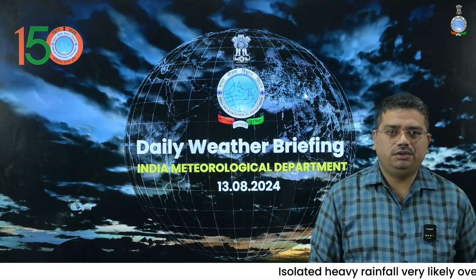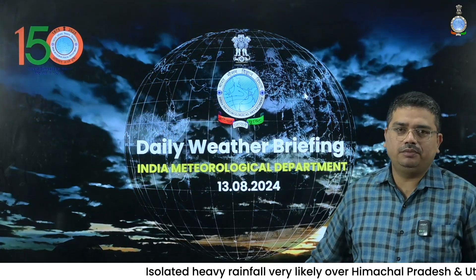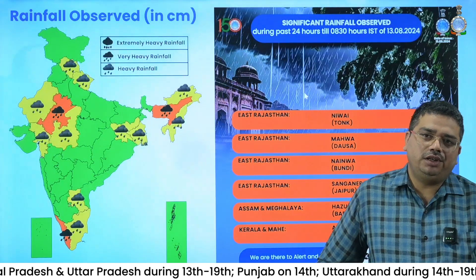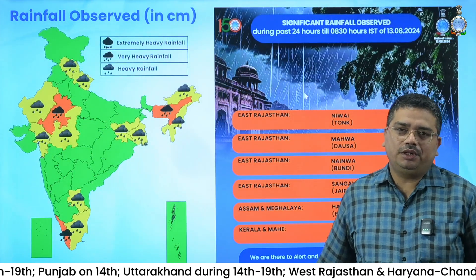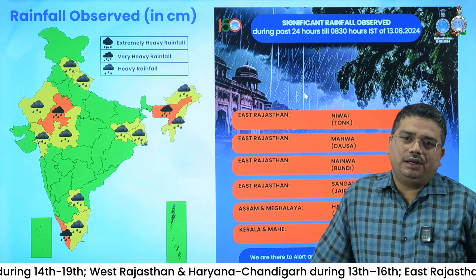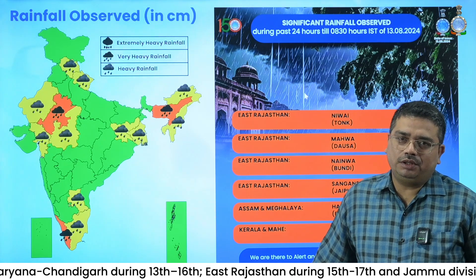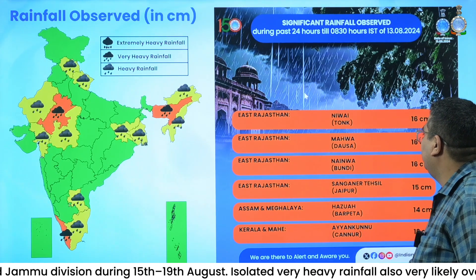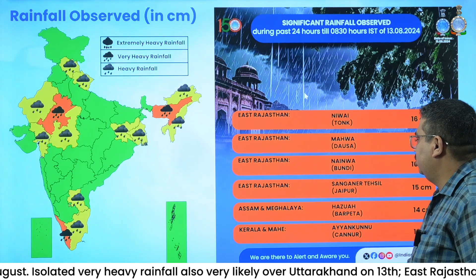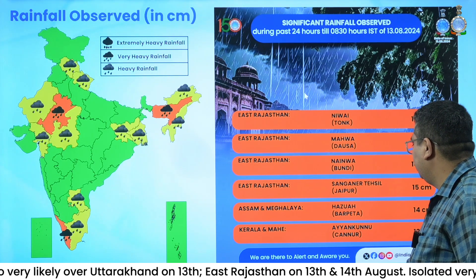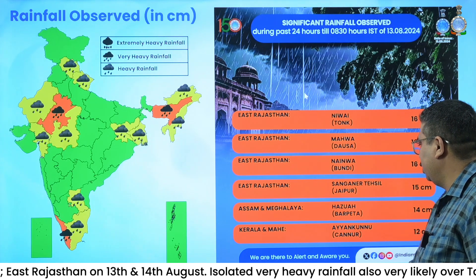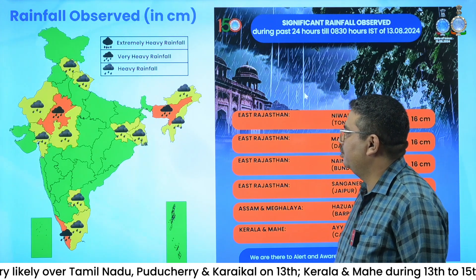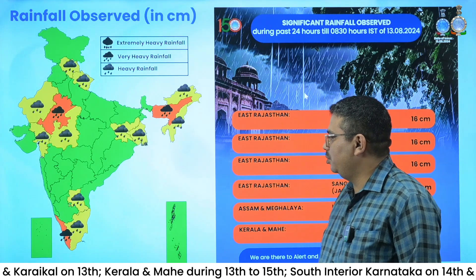Namaskar, IMD welcomes you to its daily weather briefing. Today is 13th August. If we see yesterday's realized rainfall, rainfall was mainly reported over eastern parts of Rajasthan, Assam, Meghalaya, and Kerala. The highest rainfall reported over east Rajasthan was of the order of 16 centimeters over the districts of Tonk, Dausa, and Bundi, and rainfall of the order of 14 centimeters in Barpeta in Assam and Meghalaya subdivision, and 12 centimeters in Kannur district over Kerala.